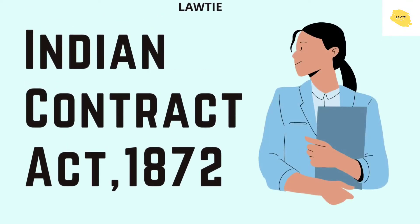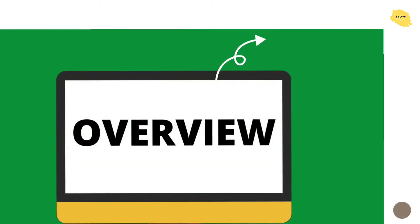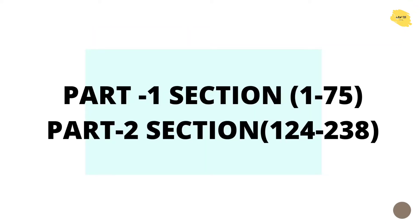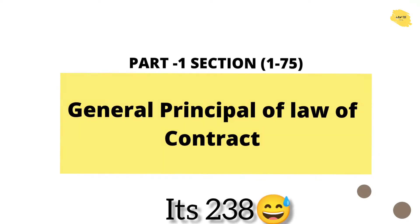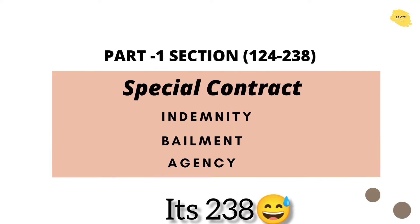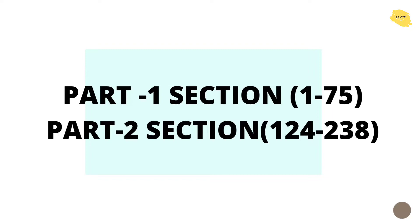Hello guys, welcome to Law Tie. Today in this video I will teach you about the Indian Contract Act interpretation clause. In the last video we saw the overview of the Indian Contract Act. In Part 1, Section 1-75, we talk about general principles of contract law, and in Section 124-233 we talk about special contracts like bailment and indemnity.